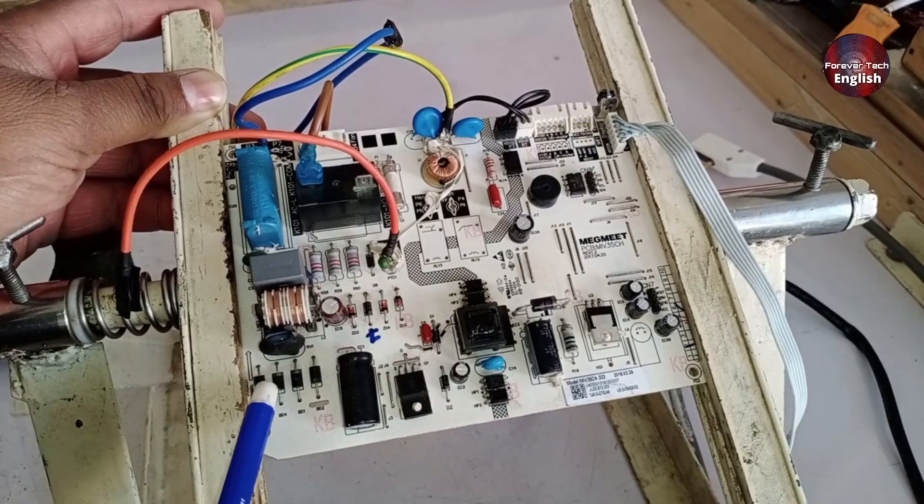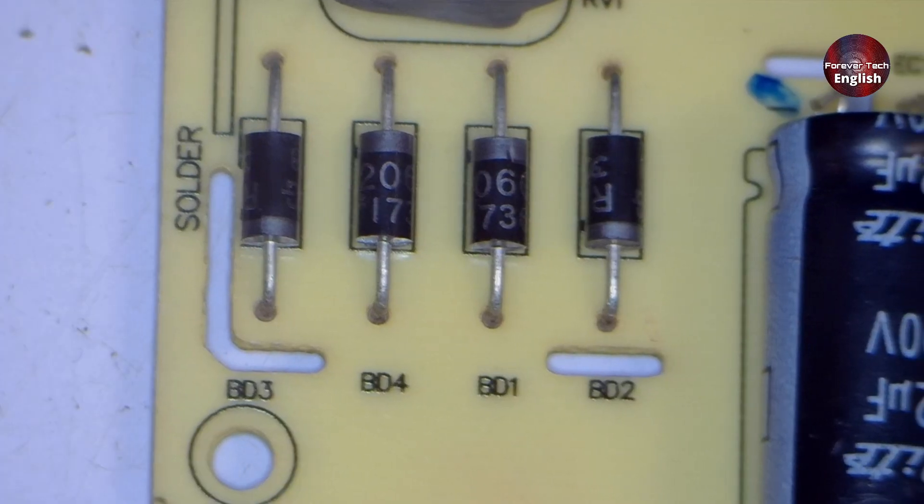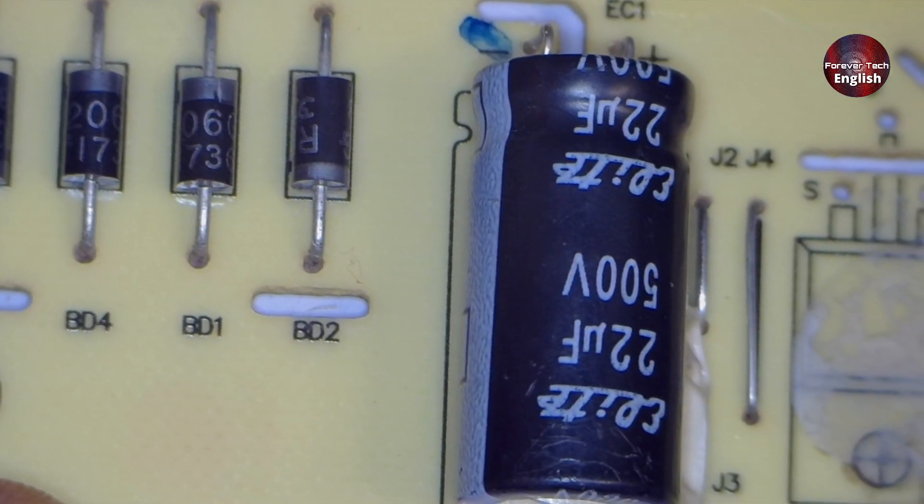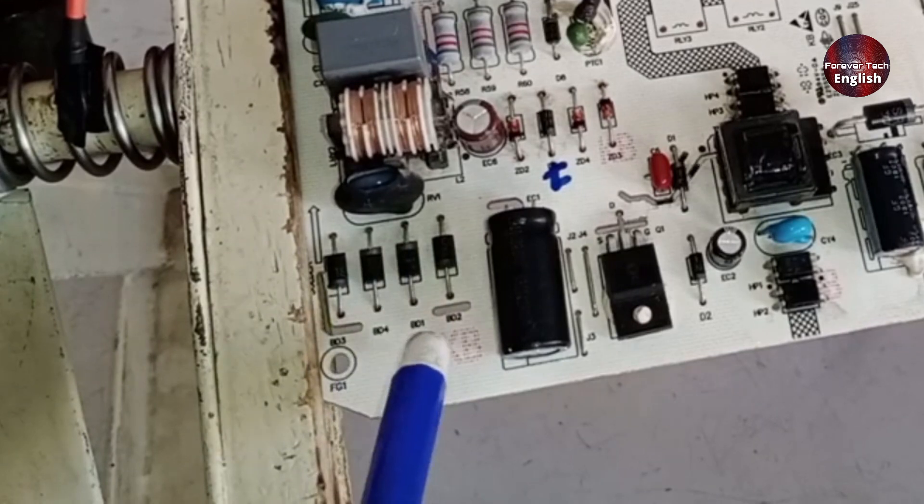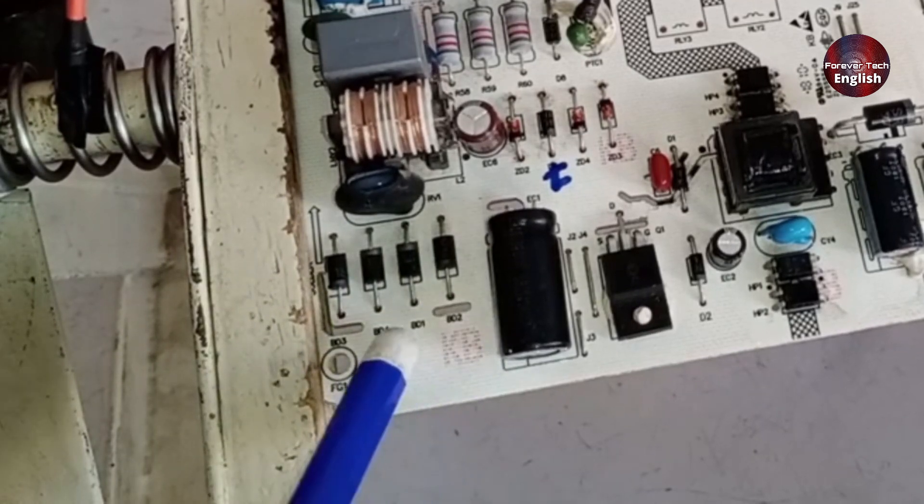As soon as rectification occurs and the AC is converted to DC, this capacitor removes ripples and smooths the voltage, so instead of 220 or 230 volts, you should get 310 or 320 volts here.